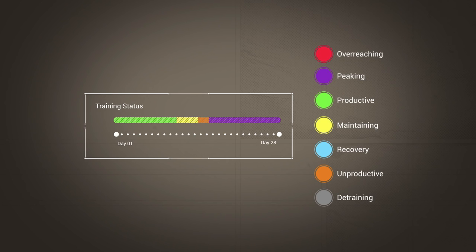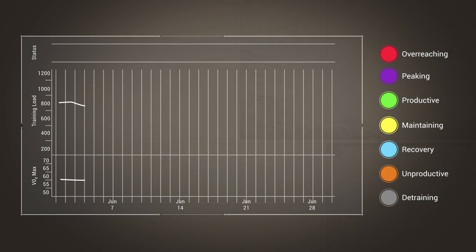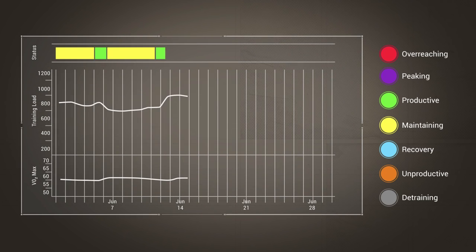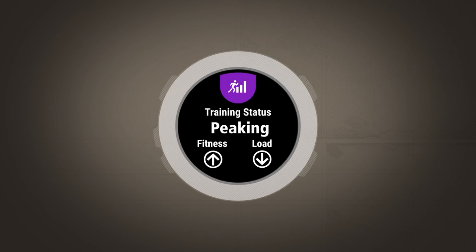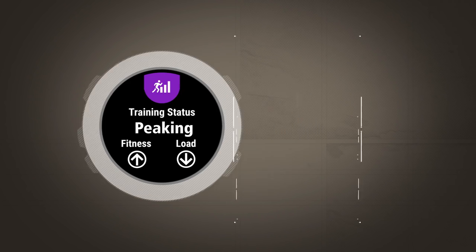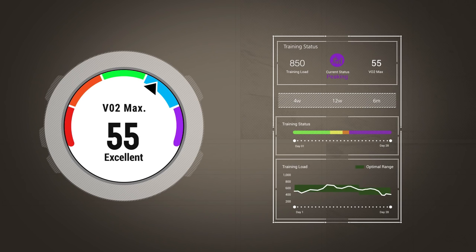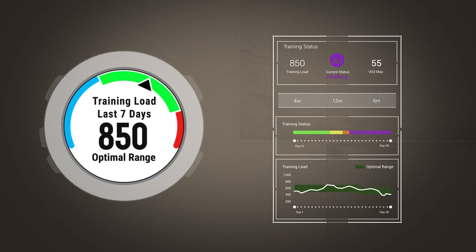Getting optimal results requires some training history. The first several days you use your device, it will be learning your fitness level and beginning to build your training history. After a week, it will use the data acquired thus far for the short-term to project your longer-term training history. By this point, you will begin to see a training status, which is shown on your watch on the performance widget and graphed on Garmin Connect. The more you use your device, the more data it will gather, so results will be based more and more on your true training history.